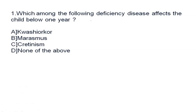First question: which of the following deficiency diseases affects children below one year? The right answer is marasmus. Marasmus is a form of severe malnutrition where a child's weight is low for their age. Kwashiorkor is also a protein deficiency disease — please remember.